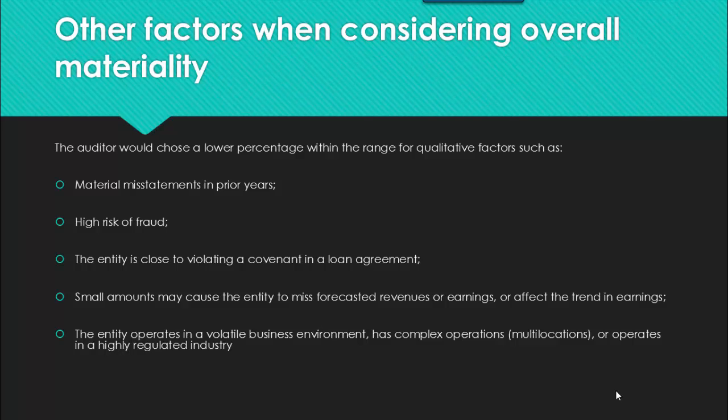The auditor would choose a lower percentage if there are other factors, such as material misstatements in prior years, the risk of fraud, or high risk of fraud. Perhaps the entity is close to violating a covenant on a loan agreement, so we need to be much more concerned with incremental change within the financial statement. Small changes may affect the entity's forecasted revenue or earnings, and perhaps the organization might be managing their earnings. Therefore, we may want to lower the overall level of materiality.